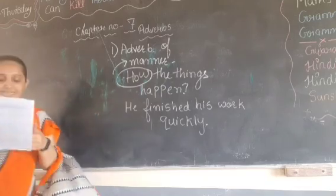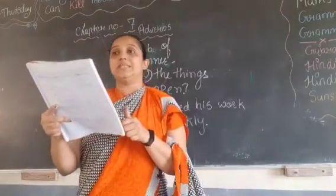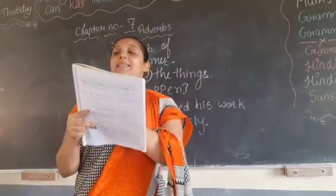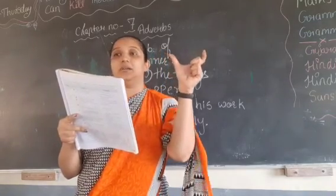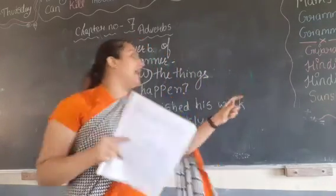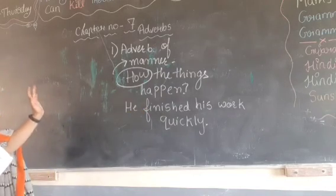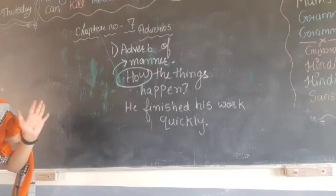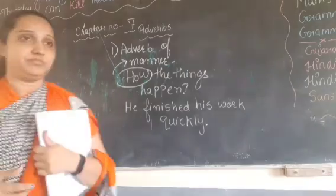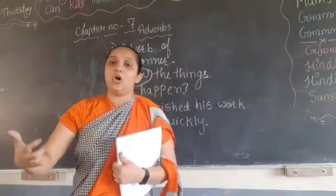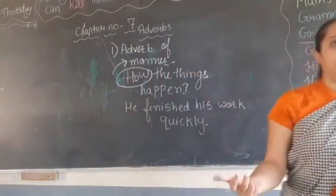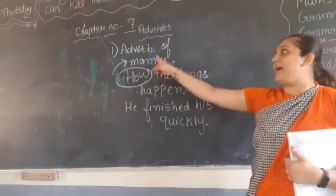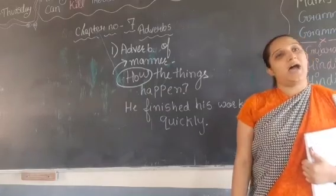This example you can write in page number 52, question number 8, where types of adverb are given with blanks. Write: 'He finished his work quickly.' So manner is equal to 'how' — that is what you will remember.